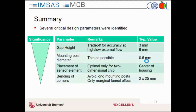As a summary, we identified several critical design parameters. The gap height: we had to find a trade-off between less distortion at higher velocities and good sensitivity at low velocities, so the final value should be somewhere between 3 and 6 mm. Second, the mounting post diameter: we started with thicker posts of 3 mm, which gave very bad results, so we quickly changed to 0.6 mm needles — but we cannot go further because we need them for mechanical stability. Third, the placement of the sensor element: best placed in the center of the housing, but that's only possible with the 2D chip.